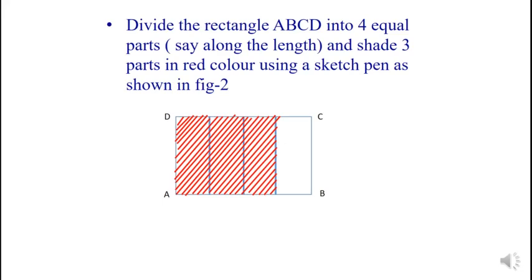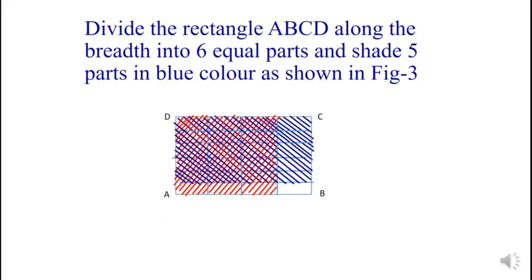Then divide the rectangle. This is our figure 2. In figure 2, the rectangle ABCD is divided into 4 equal parts vertically and 3 parts are shaded with red sketch pen. Then divide the rectangle ABCD along the breadth into 6 equal parts and shade 5 parts in blue color, as shown in figure 3.